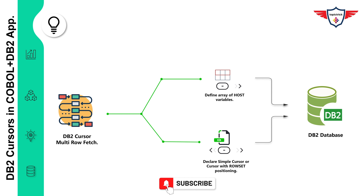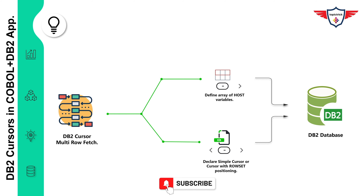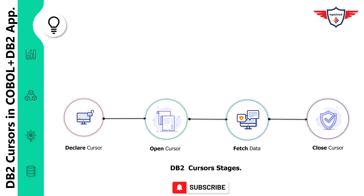When writing a COBOL DB2 program to fetch multiple rows, your program needs two important declarations. First, define an array of host variables to receive data from the result set; their data types should align with the corresponding column data types, and each fetched column must have a corresponding host variable. Second, define the cursor in the working storage section — either a simple cursor or a cursor with row set positioning, with the latter being preferred for its additional features.